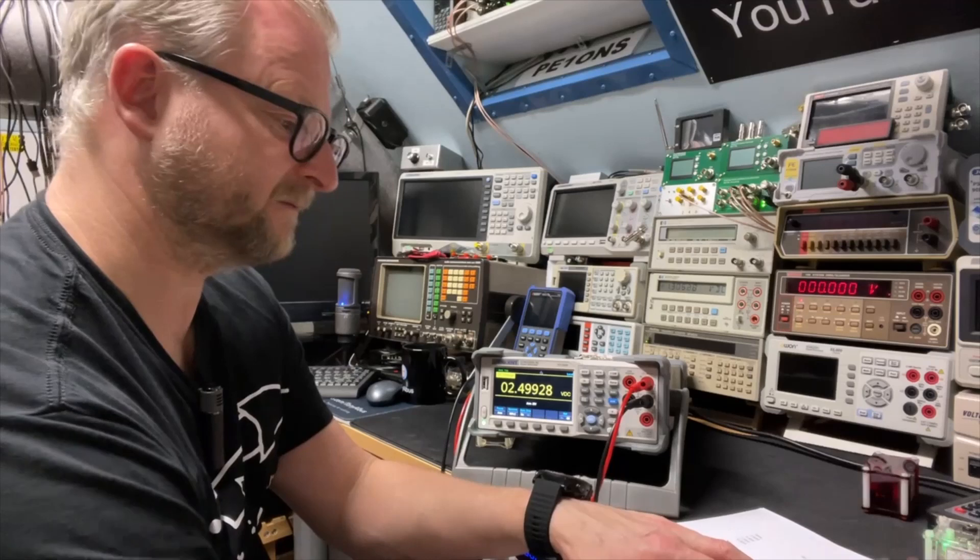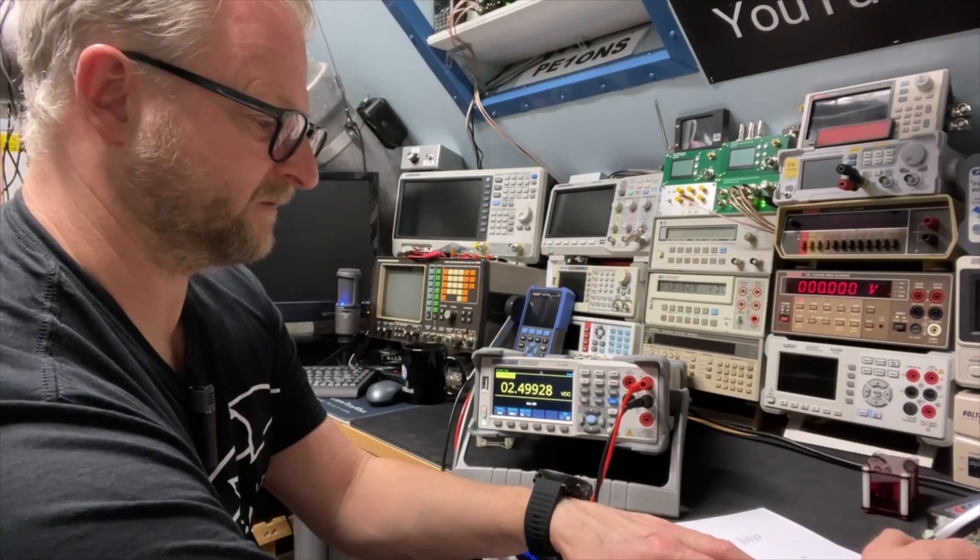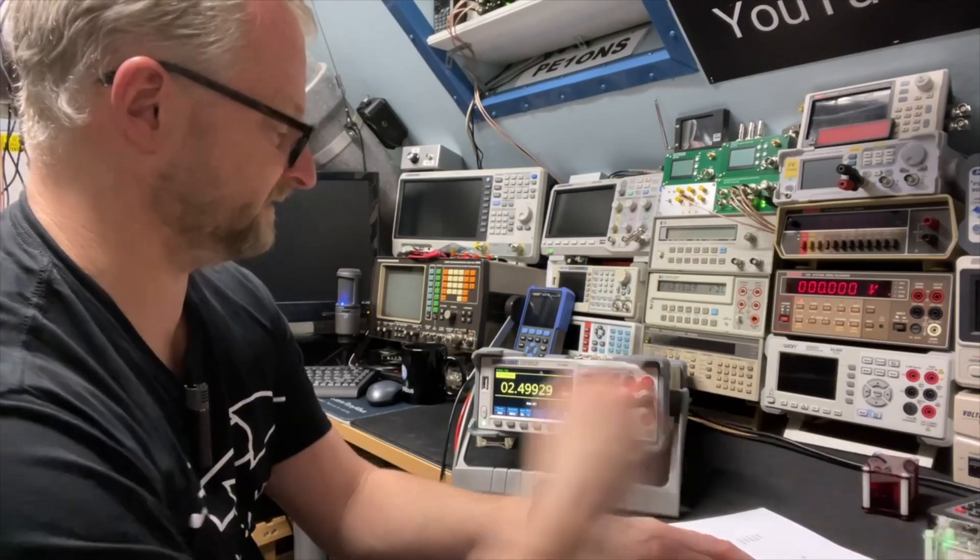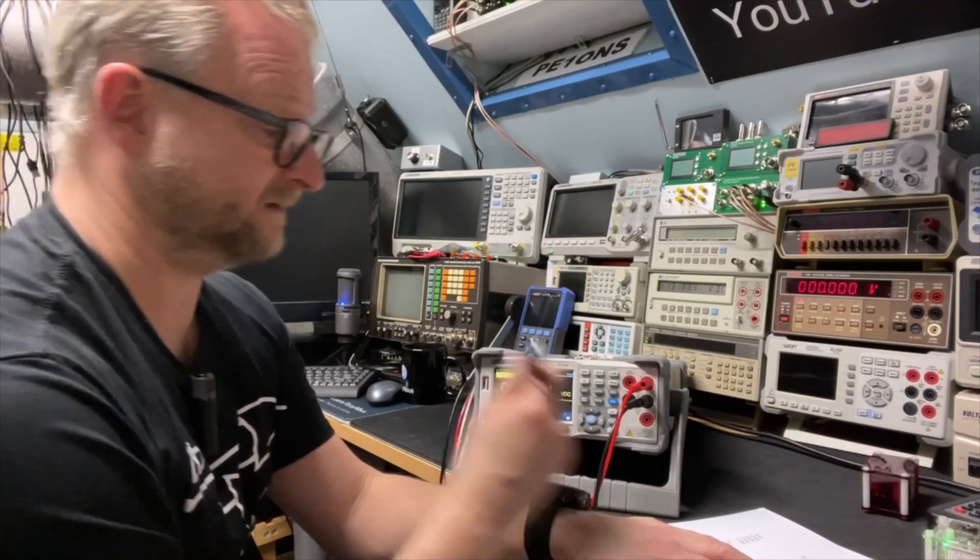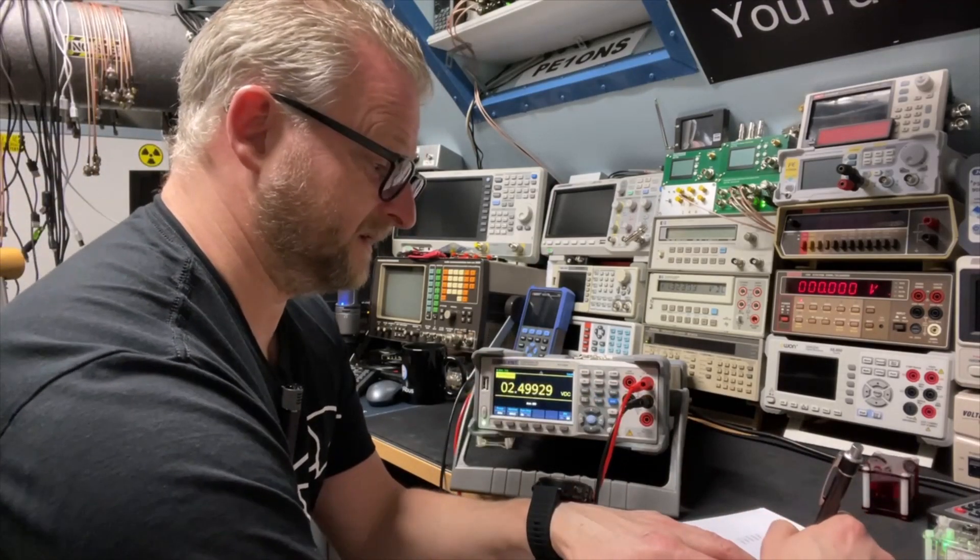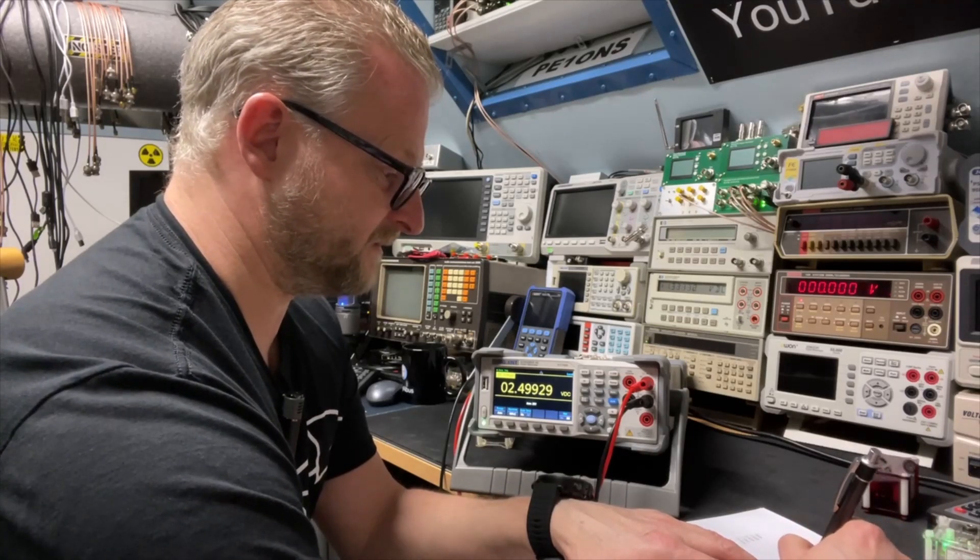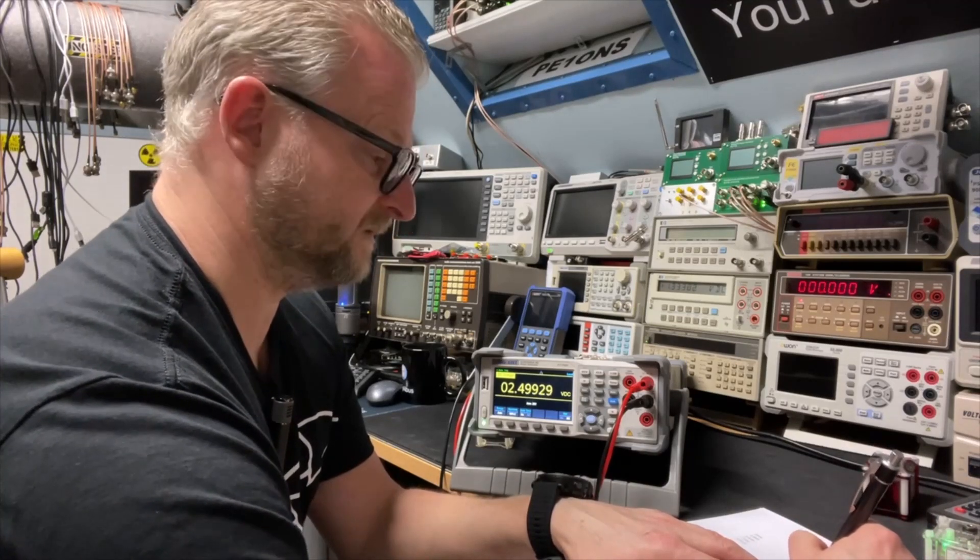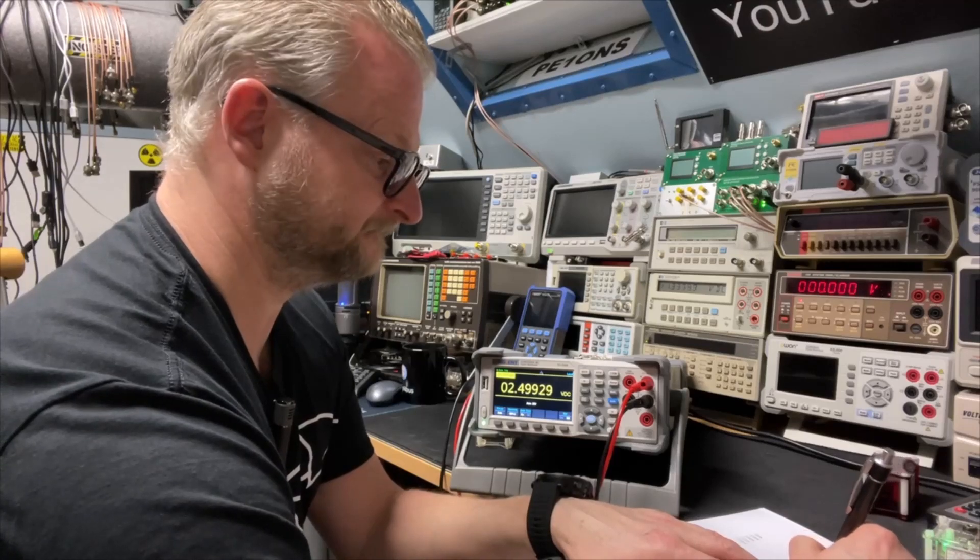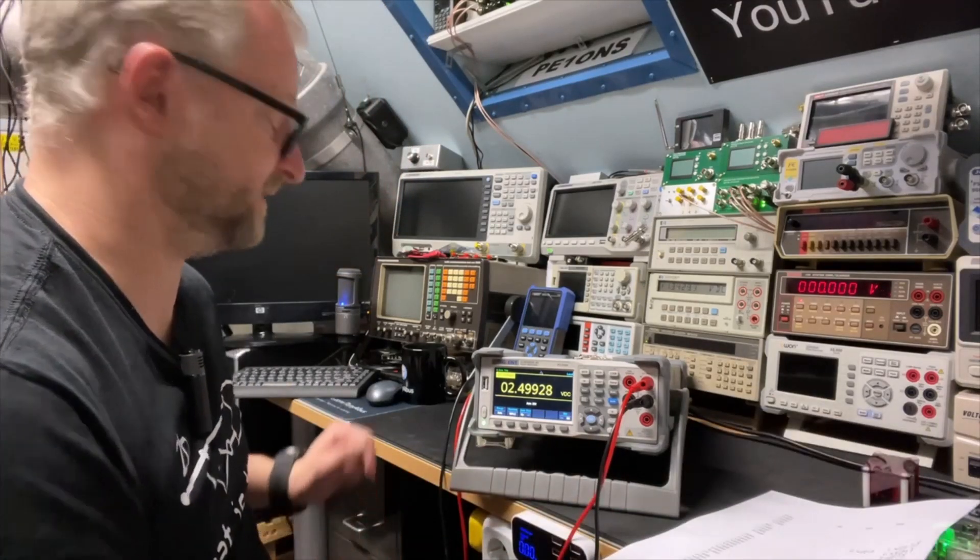Now I can do these things. I have the 6.5 here so thanks Siglent Europe for having me borrow this. I will immediately use it. You see it's immediately stable so we will write this value down. It should have been 2.49938 and this is 2.8 so it is not bad at all, 49928. So the guy doesn't lie too much.